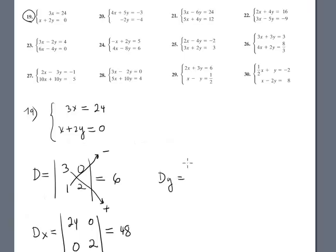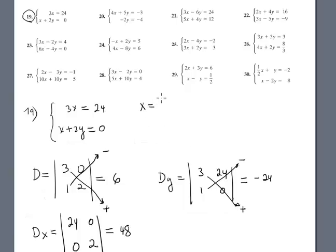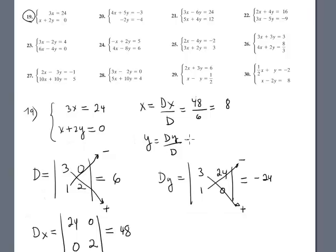Dy is: the matrix is 3, 1, 24, 0. Multiplication of this and that is negative 24 because plus here, minus here. Now x equals Dx over D: Dx is 48 divided by 6 equals 8. And y is Dy divided by D: negative 24 divided by 6 is negative 4. The solution is (8, -4).